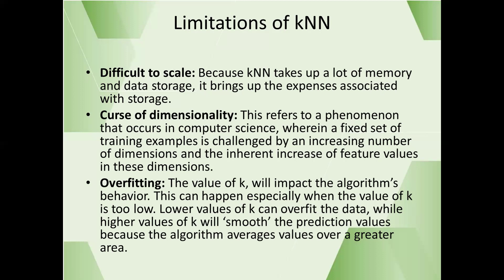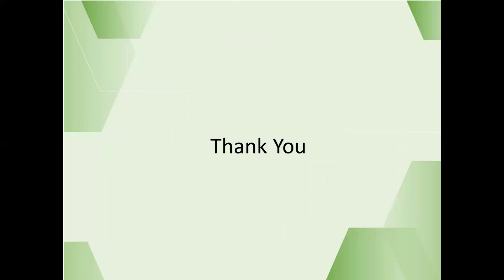A low k value leads to overfitting. If we select a high value of k, it produces smoother prediction values, but it also affects the outcome and performance of the algorithm. So, choosing the correct k is essential for the efficiency of the k-nearest neighbor algorithm.